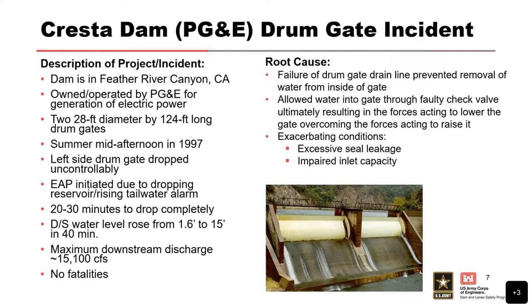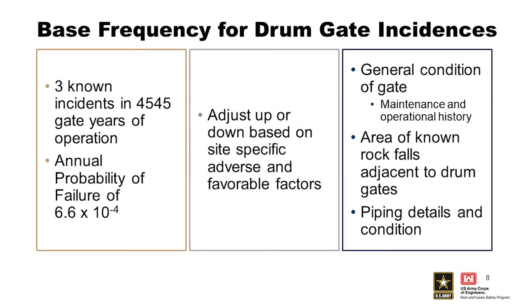The root cause, again, was the drum gate drain line preventing the removal of water from inside the gate — it loses buoyancy and starts to lower inadvertently. With three known incidents in 4,500 years of operation, the annual probability of failure is 6.6 times 10 to the minus 4. Adding six years to get to current day numbers, you can see that this annual probability of failure is going to continue to decrease as long as we don't have additional failures. If you're working on a USACE or USBR project, this is kind of a lower bound — these are the recorded incidents.